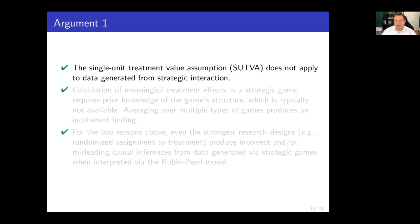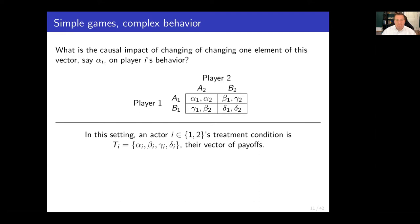So let's start with the first argument: SUTVA does not apply. Here's a very simple game. We're using this very simple game because if we find problems with SUTVA in this very simple game, that is going to be concerning. In this setting, we are treating the treatment condition as the vector of payoffs that correspond to those entries in the two-player simultaneous move game. We could have included other stuff in the treatment condition — like the structure of the game, action sequences, information sets, or whatever — nothing about what we're going to say is going to change. We just did it this way for simplicity and because it maps onto the idea of balancing on parameters or measured variables.